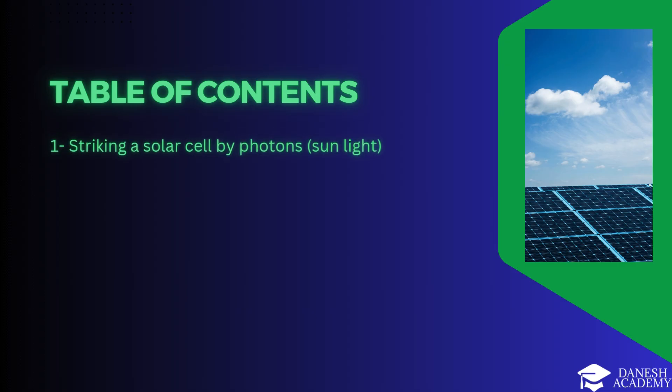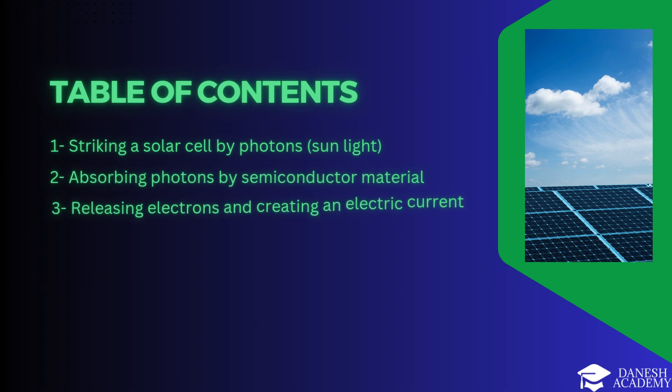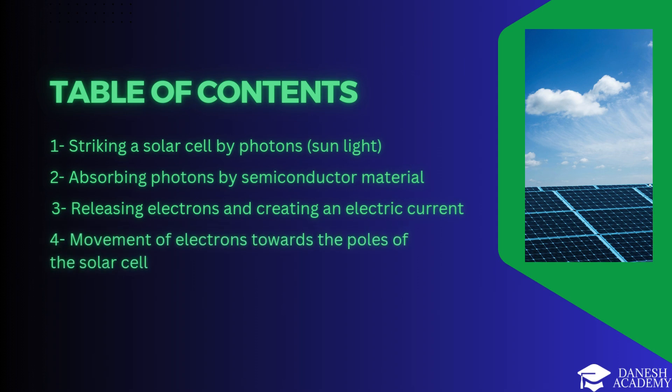Striking a solar cell by photons sunlight. Absorbing photons by semiconductor material. Releasing electrons and creating an electric current. Movement of electrons towards the poles of the solar cell. Electricity generation process, DC/AC.